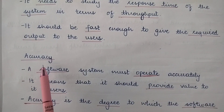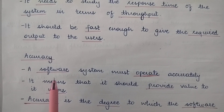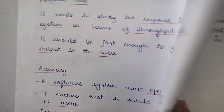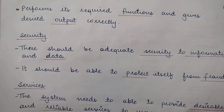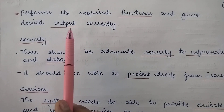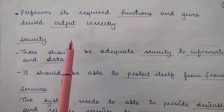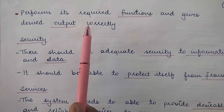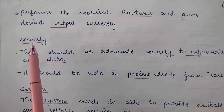The third issue related to operational feasibility is accuracy. It is very important that the software system operates accurately. If it does not operate accurately, if it does not provide the desired functions, then it is of no use — it should provide value to its users. Accuracy is the degree to which the software performs its required functions and gives the desired output correctly. Whatever output it is providing on the basis of the input, all that should be correct and accurate.